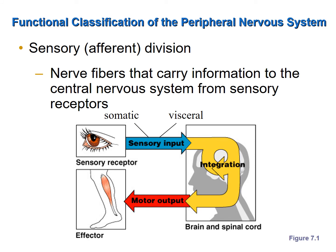Now let's talk about how components of the nervous system can also be classified functionally by what they do. Receptors that detect stimuli and the nerve fibers that send information about those stimuli to the integration center are part of the sensory or afferent division. You have receptors in your skin, in your joints, and inside your visceral organs that detect changes and send information to your brain and spinal cord — they are part of your sensory division.